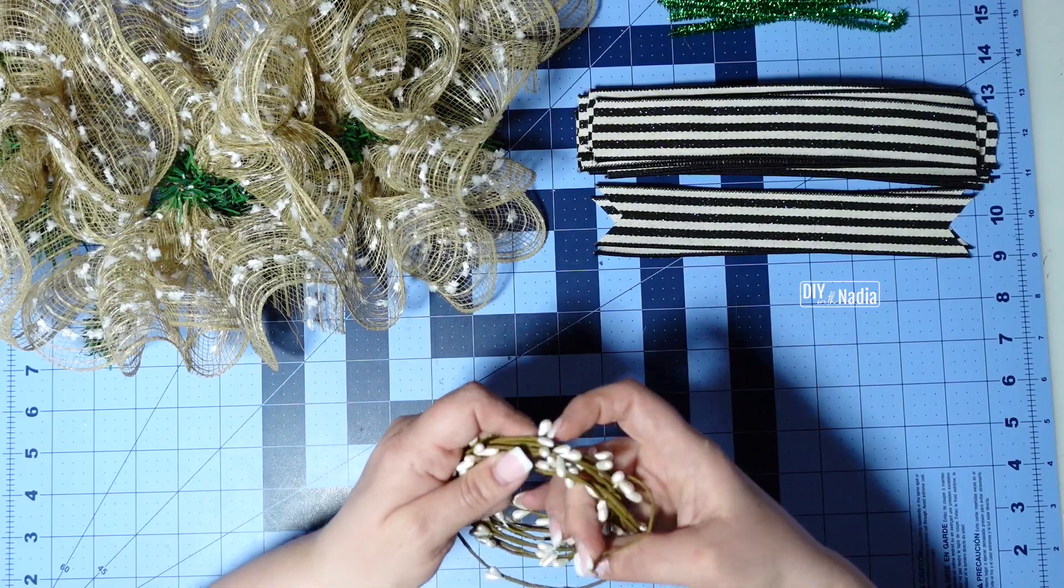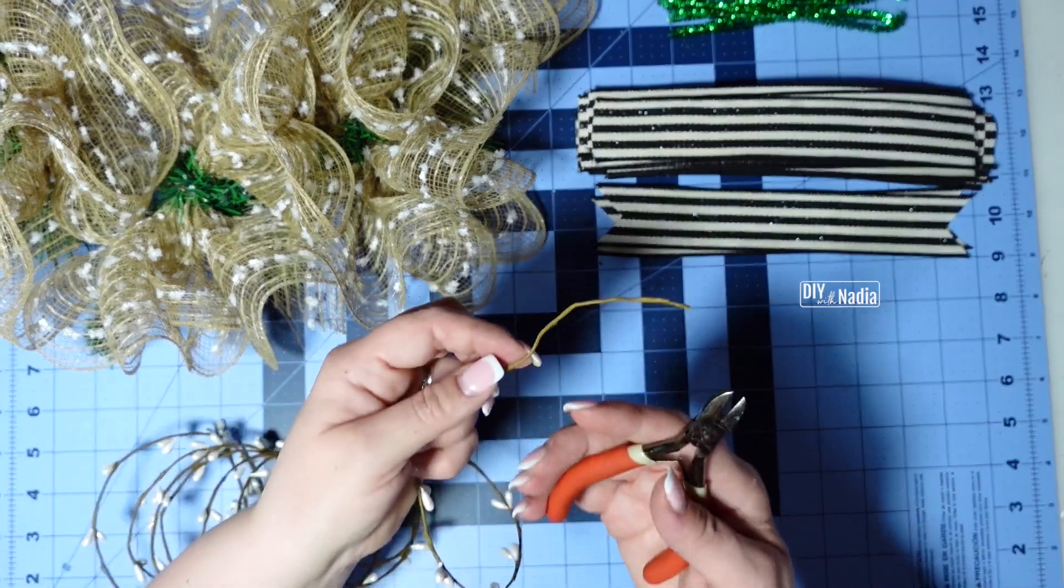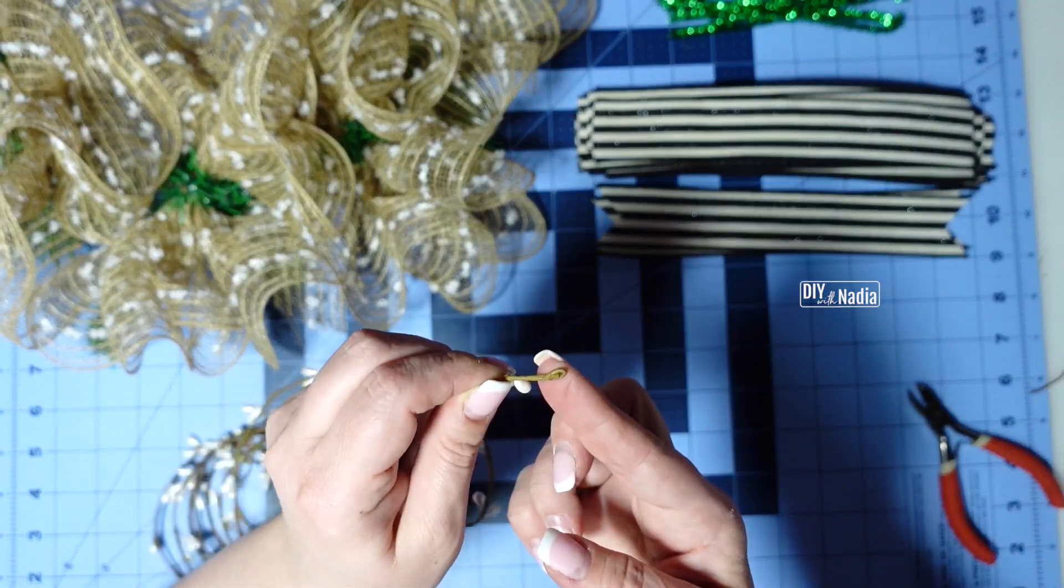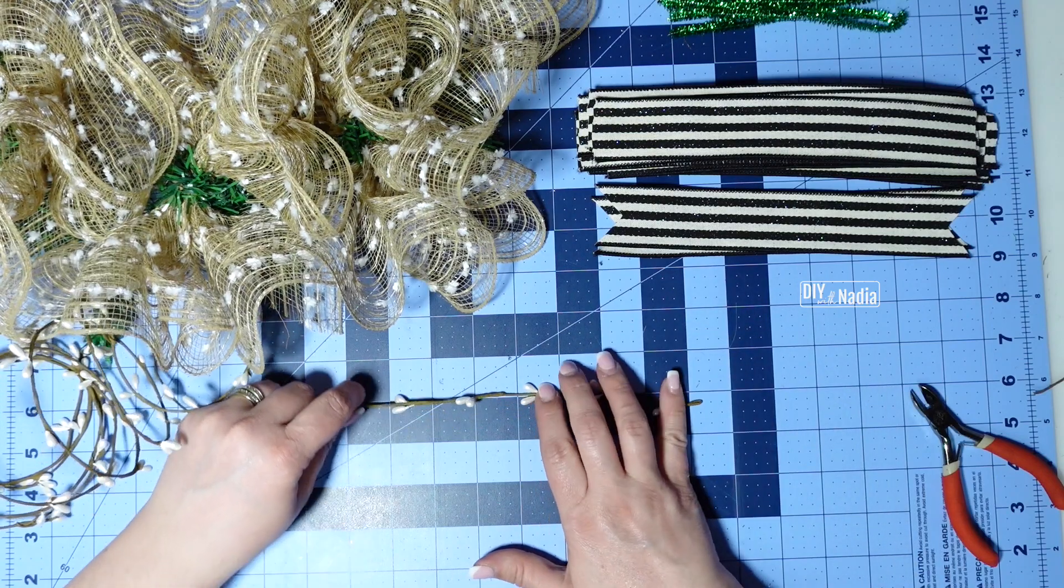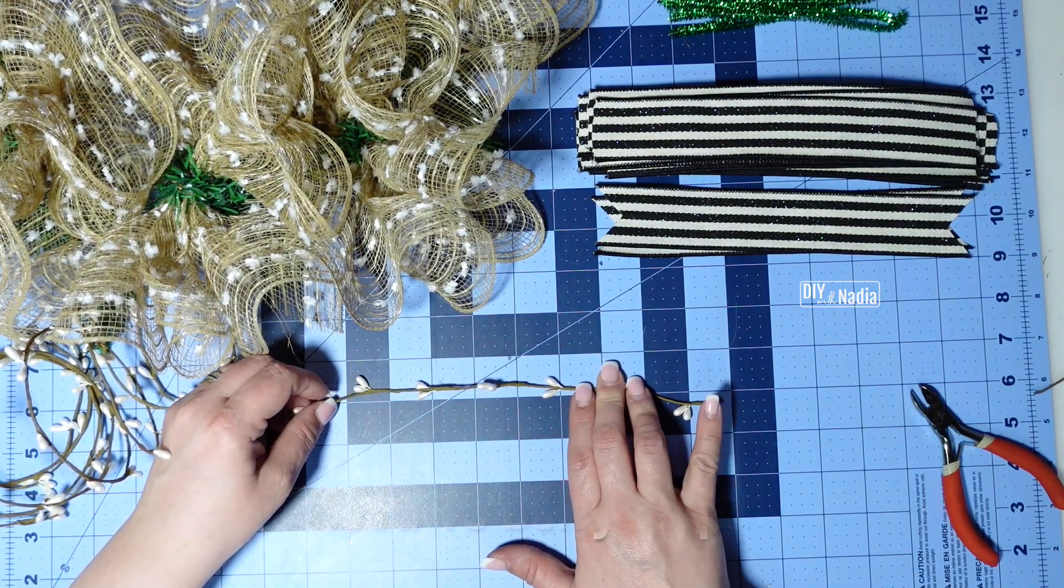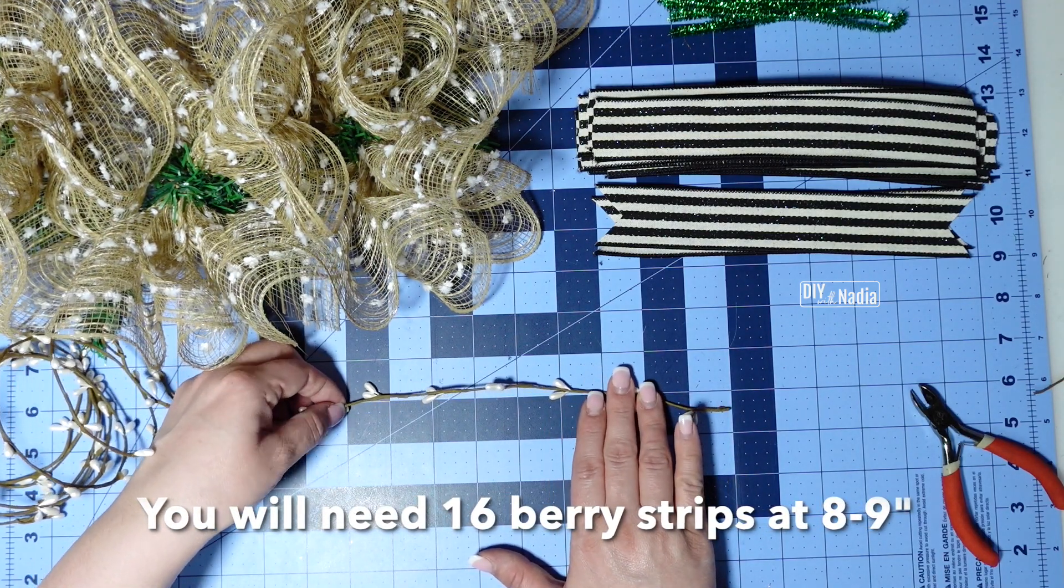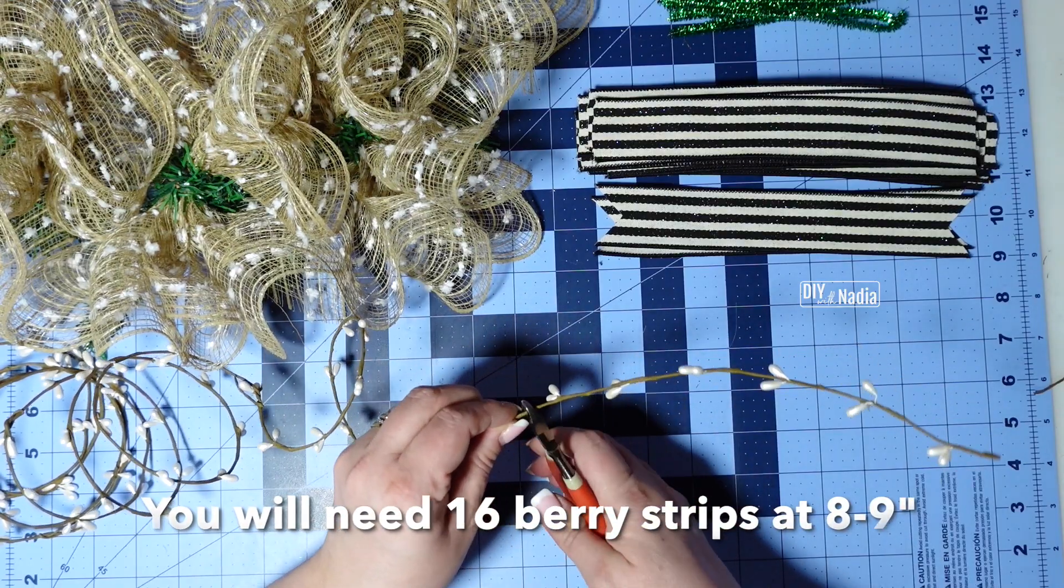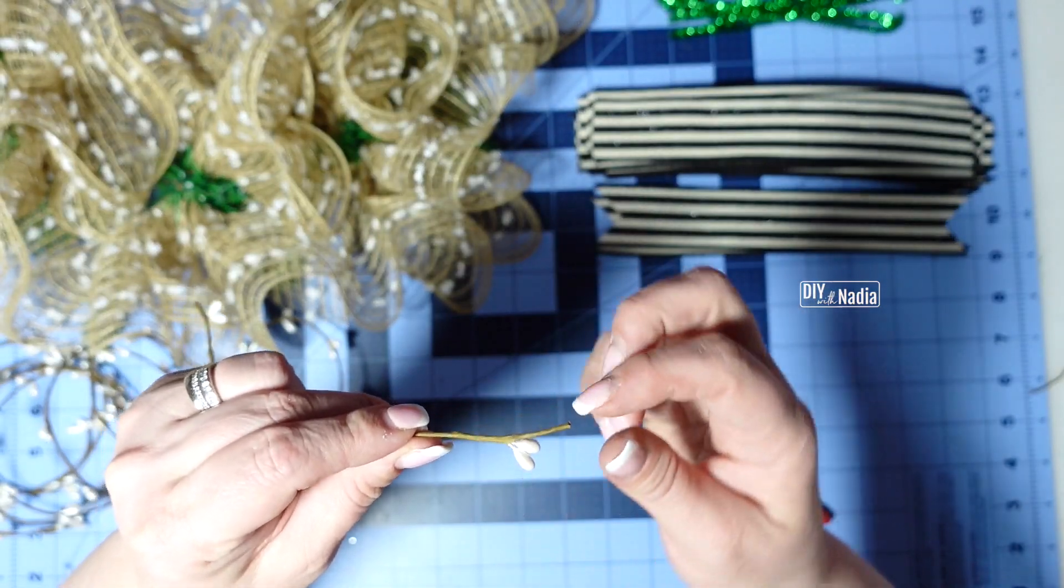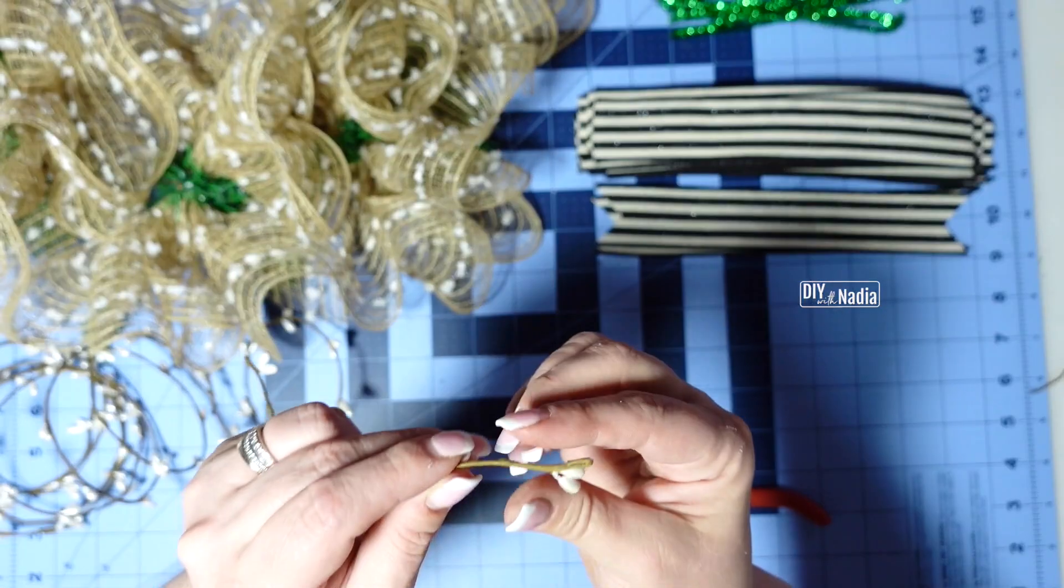And I'm going to make strips of about eight to nine inches using wire cutters to cut this. I'm just going to fold the ends just like that. Let me measure about eight to nine inches. The reason I say eight to nine is for example right here you don't want to cut it right at the berry you want to cut it in the middle so this one's going to be more of a nine inch thing.